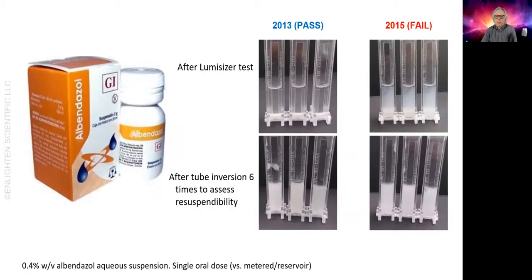In 2013 that wasn't an issue. One of the quality control tests involves a Lumisizer to centrifuge a sample, followed by looking at the appearance of the supernatant and then shaking the sample to assess the redispersibility of the sediment. In 2015 there were product failures. The amount of drug getting resuspended was low because it wasn't possible to fully redisperse the sediment.